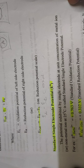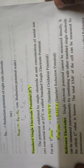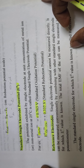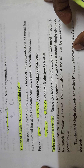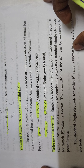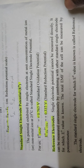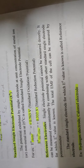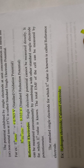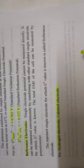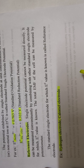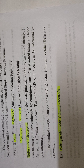Single electrode potential cannot be measured directly, so it can be measured conveniently by combining with another standard single electrode for which the E° value is known. By combining with the reference hydrogen electrode, the standard oxidation potential of zinc is 0.763 volts and the standard reduction potential of copper is 0.337 volts. In the next video I will explain how single electrode potential is measured by combining with a reference electrode.